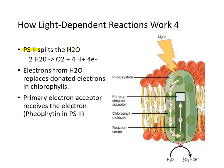Photosystem II splits the water that came in into oxygen and protons by donating two electrons from itself. Electrons from H2O replace the donated electrons in chlorophyll — all these chlorophyll molecules have lost or donated their electrons. Now water is donating more electrons. The primary electron receptor receives the electron from the water; its name is pheophytin in photosystem II.